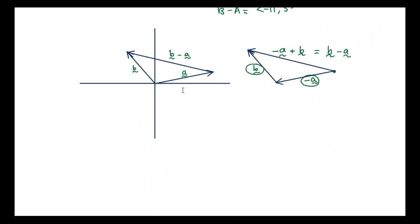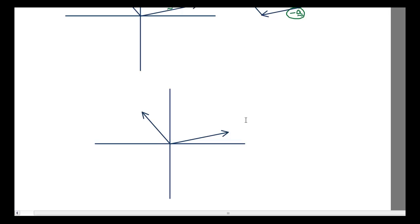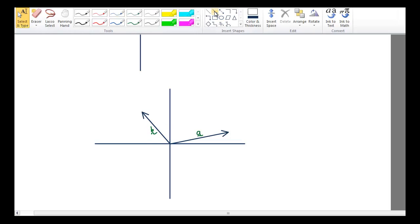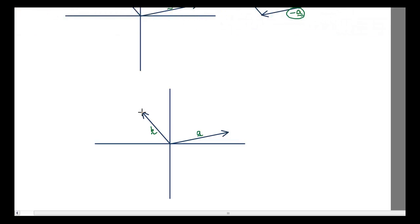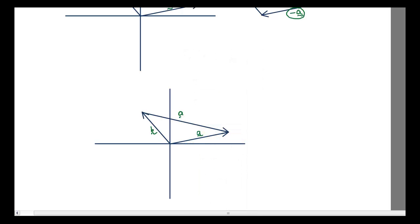Now similarly, if I wanted to reverse the direction. So if I have vector A over here, and vector B over here, and I want to go from the head of vector B, all the way back to the head of vector A, then this would be A minus B.